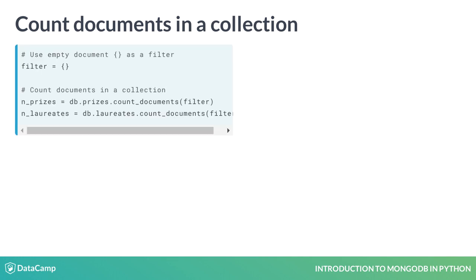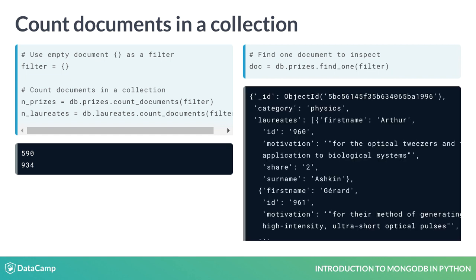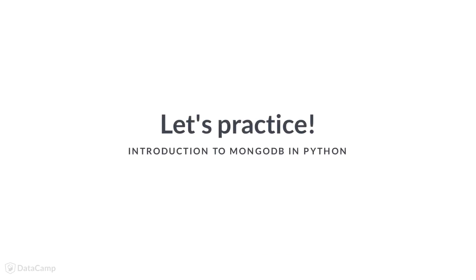Pass a filter document to limit what you count. In this case, I want an unfiltered total count, so I pass an empty document as the filter. Finally, you can fetch a document and infer the schema of the raw JSON data given by the Nobel Prize API. Use the find_one method, again with no filter, to grab a document from the collection. Now, let's practice! You'll access databases and collections from a connected client, you'll count documents, and you'll...